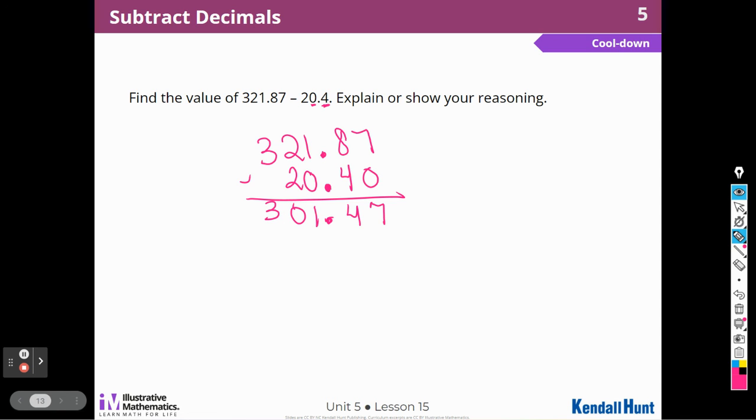So let's add to check. 301 and 47 hundredths plus 20 and 40 hundredths. Seven plus zero is seven. Four plus four is eight. One plus zero is one. Two plus zero is two and three. So I did get the correct answer.